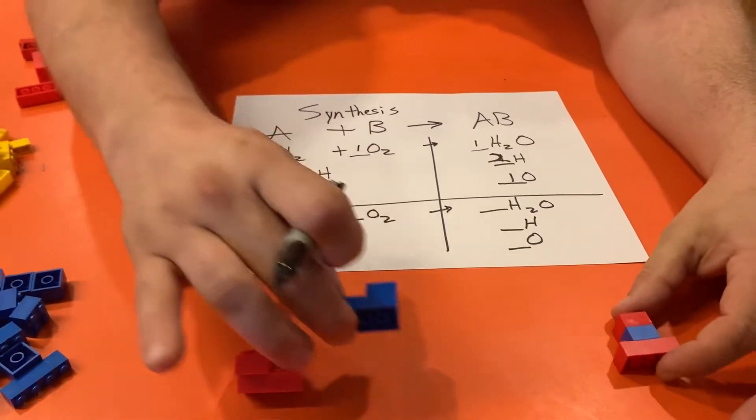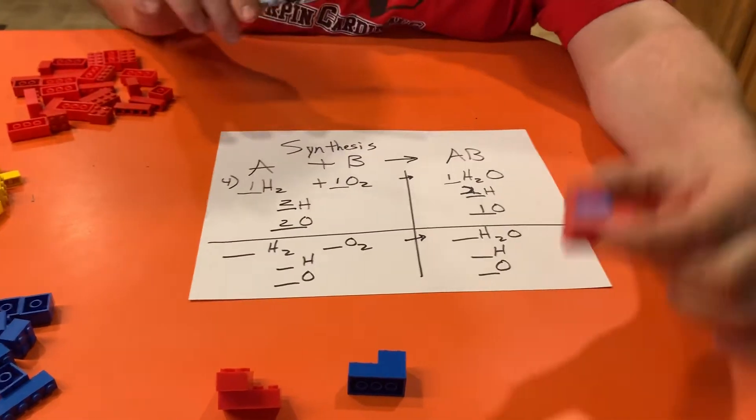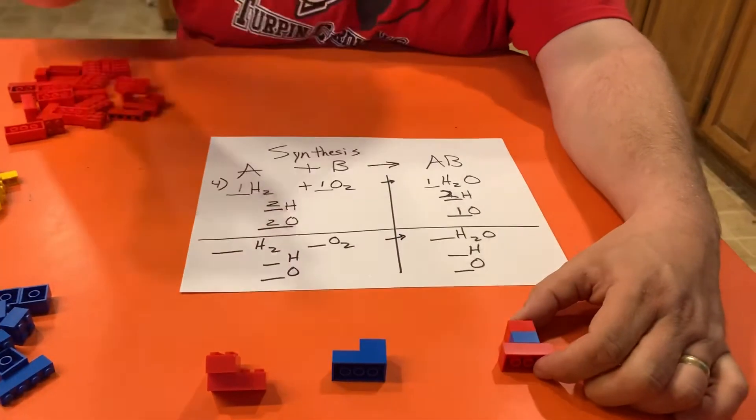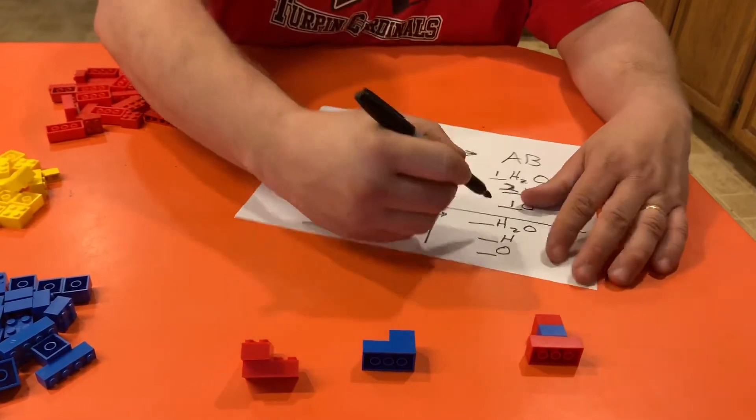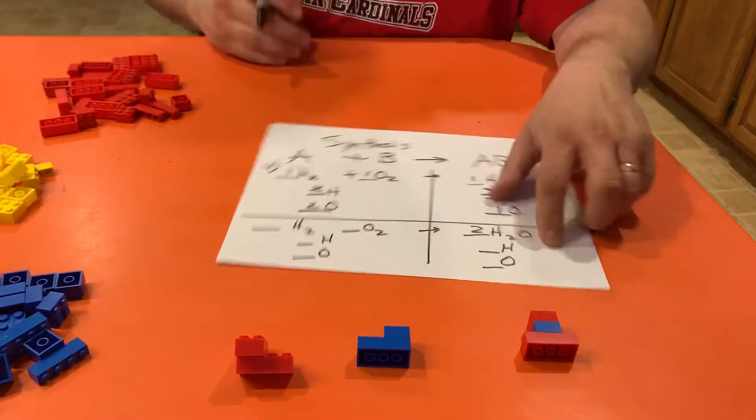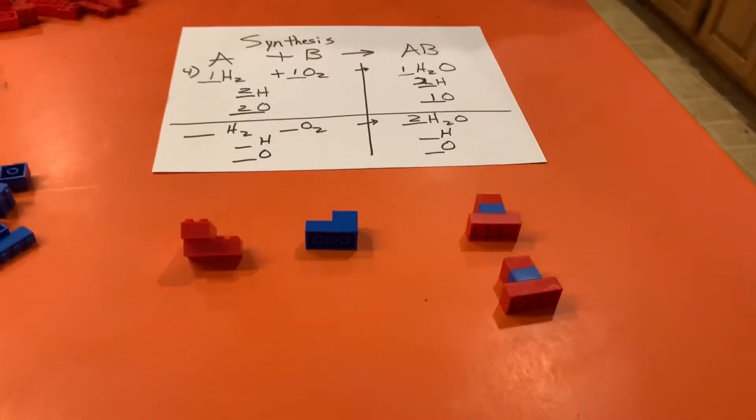When you're looking at it, you can tell I don't have enough blue Legos over here. I've got two over here, I've got one. So I have to have more of those. So I'm gonna go ahead and I'm just gonna go simple. I'm just gonna double the amount of water. So now I've got two of those.